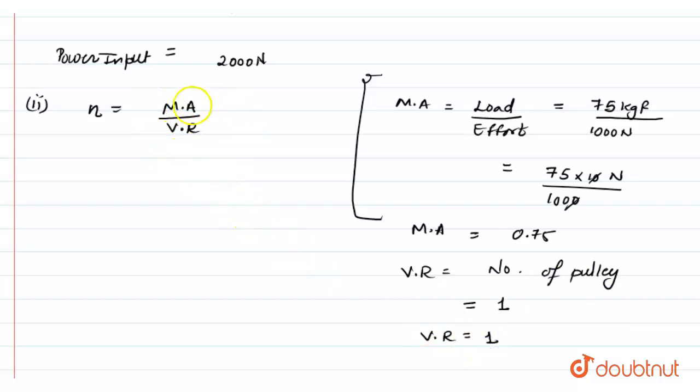Now we have to find out the efficiency of the system. Efficiency is the ratio of mechanical advantage upon velocity ratio into 100%. Mechanical advantage is 0.75 and our velocity ratio is 1. By multiplying it with 100, our efficiency comes out to be 75%.